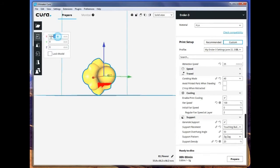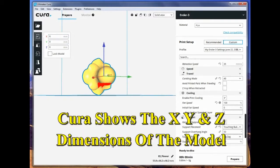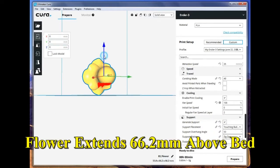We want to lower the flower along the Z axis, half of its height, so at 66.2 we're going to lower it a minus 33.1.